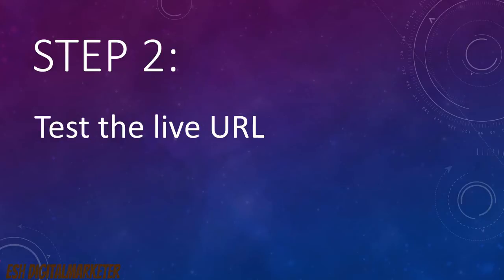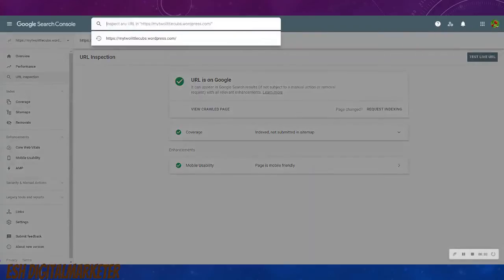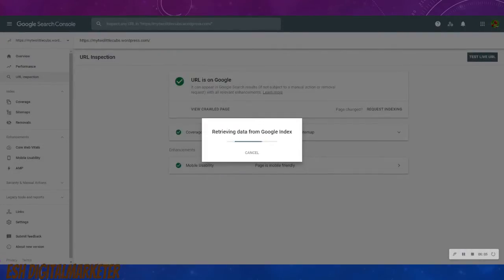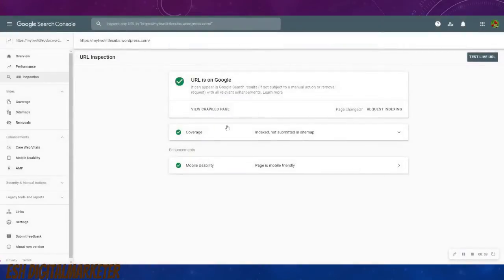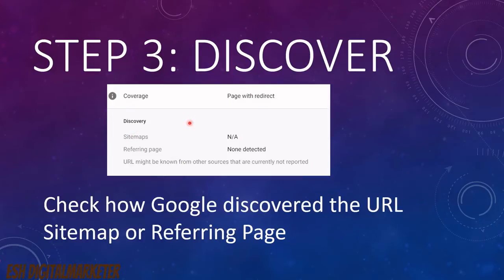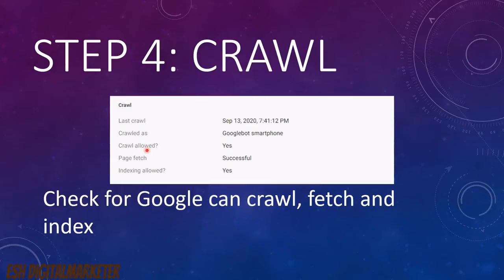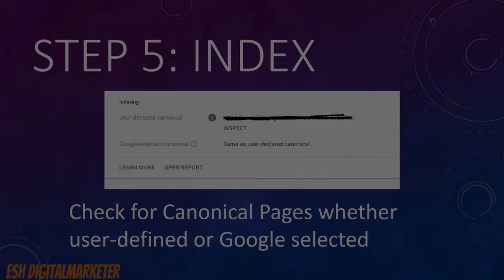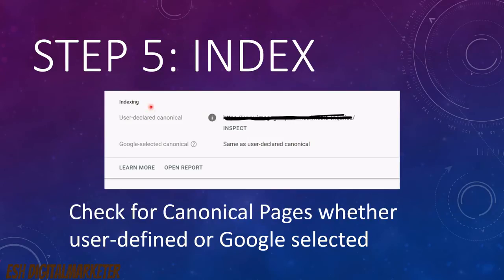Check the live URL to see how Google discovered the pages — whether it can crawl or index them. Test the live URL to see how Google discovered your page, whether through a sitemap or a referring page. Next, check the crawlability issues: whether the page is crawlable, indexable, and whether Google fetched the page successfully with a 200 OK response. So Google can crawl, fetch, and index this page, but it is still excluded.